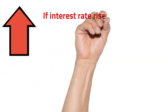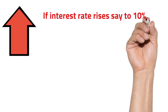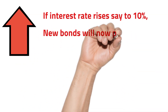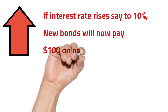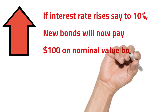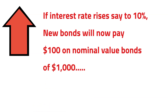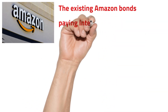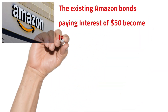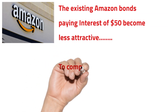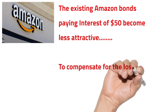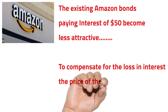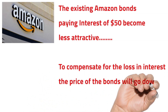What happens if the interest rate in the economy rises, let's say to 10%? This means new bonds will now pay $100 on a nominal value of $1000. Well, the existing Amazon bonds paying interest of $50 become less attractive. To compensate for the loss in interest, the price of the bonds will go down.